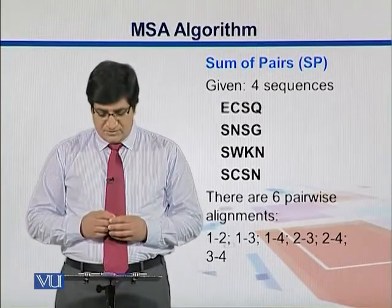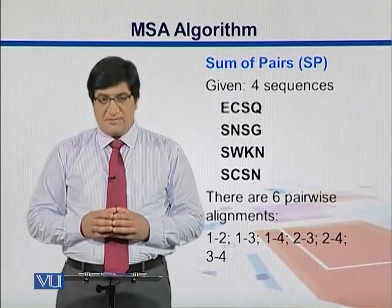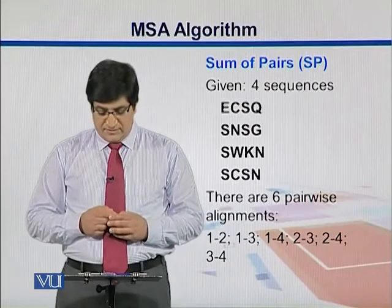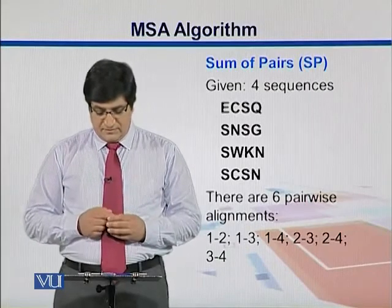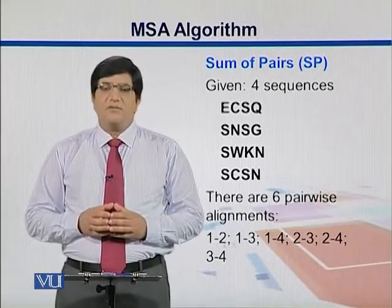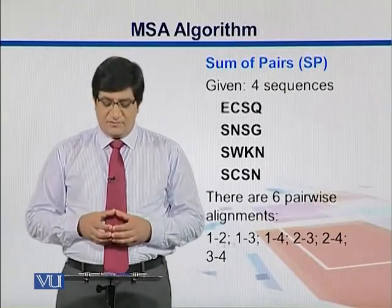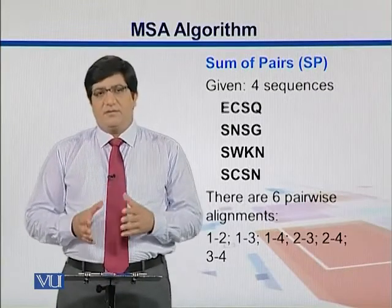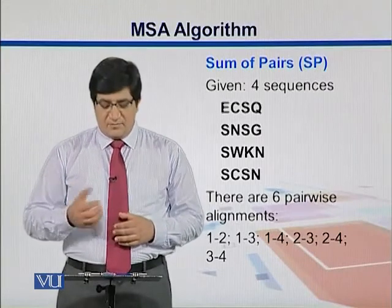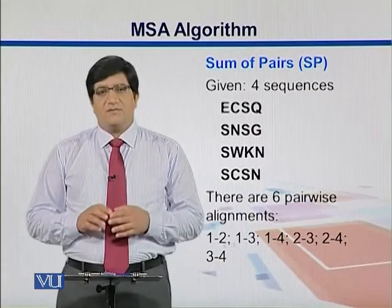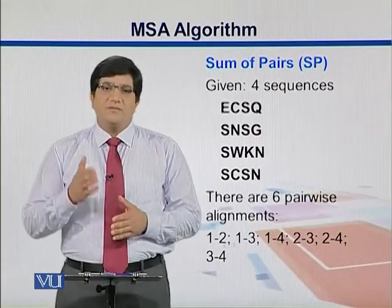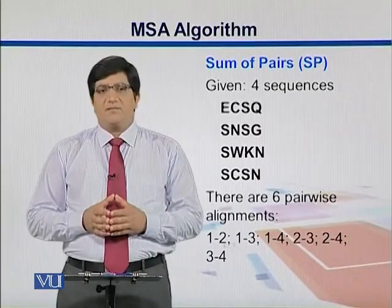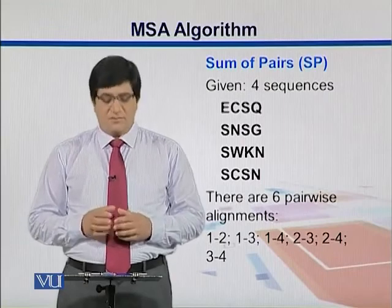For example, we have four sequences — these are amino acid sequences, protein sequences like ECSQ, SN, SG, SWKN, SC, and SN. How many pairwise comparisons can we have if we have four sequences? We see that there are six pairwise comparisons if we remove duplicate comparisons. We can compare sequence 1 with 2, 1 with 3, 1 with 4, then 2 with 3, 2 with 4, and then 3 and 4. So in total we have six possible comparisons for four sequences.